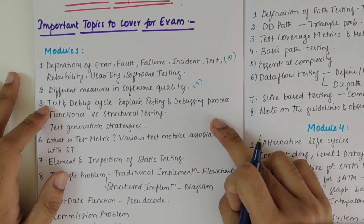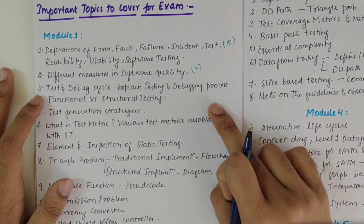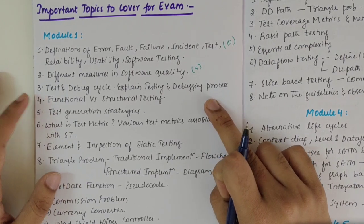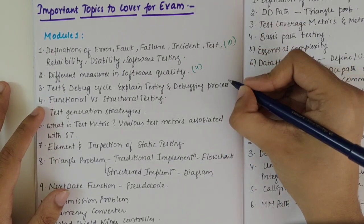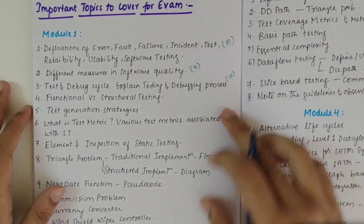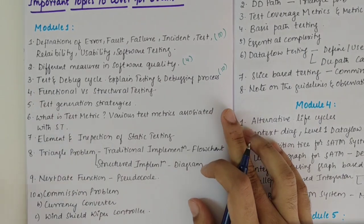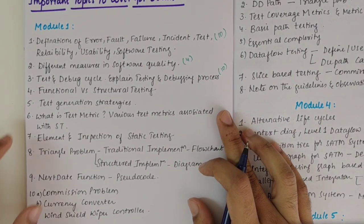Next we have the test and debug cycle. There is a diagram for this test and debug cycle — explain the testing and debugging process. This could be asked for 10 marks because you need to draw the diagram and explain all the terminologies properly.